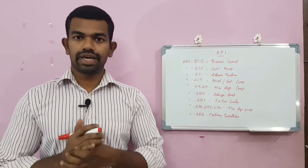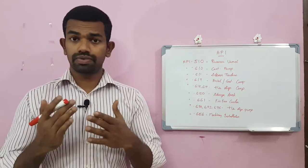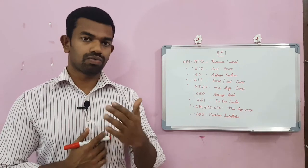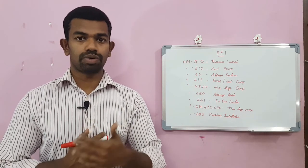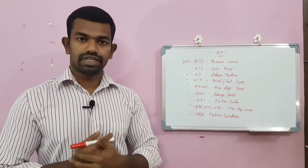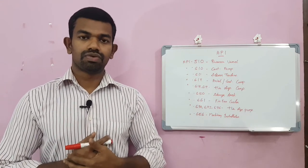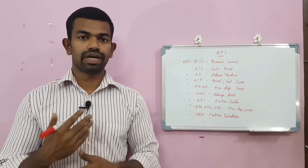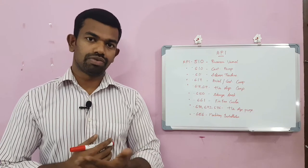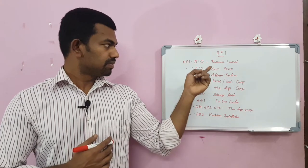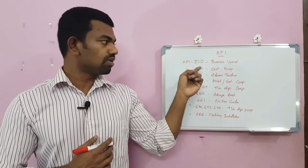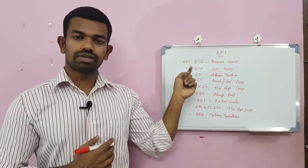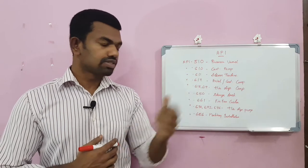Now for API — it has many codes, but we will cover only the top important ones. API 510 is for pressure vessels — specifically for re-rating pressure vessels under maintenance, modification, or alteration. It is not applicable to new vessels; it is only for in-service vessels. API 610 is for centrifugal pumps.